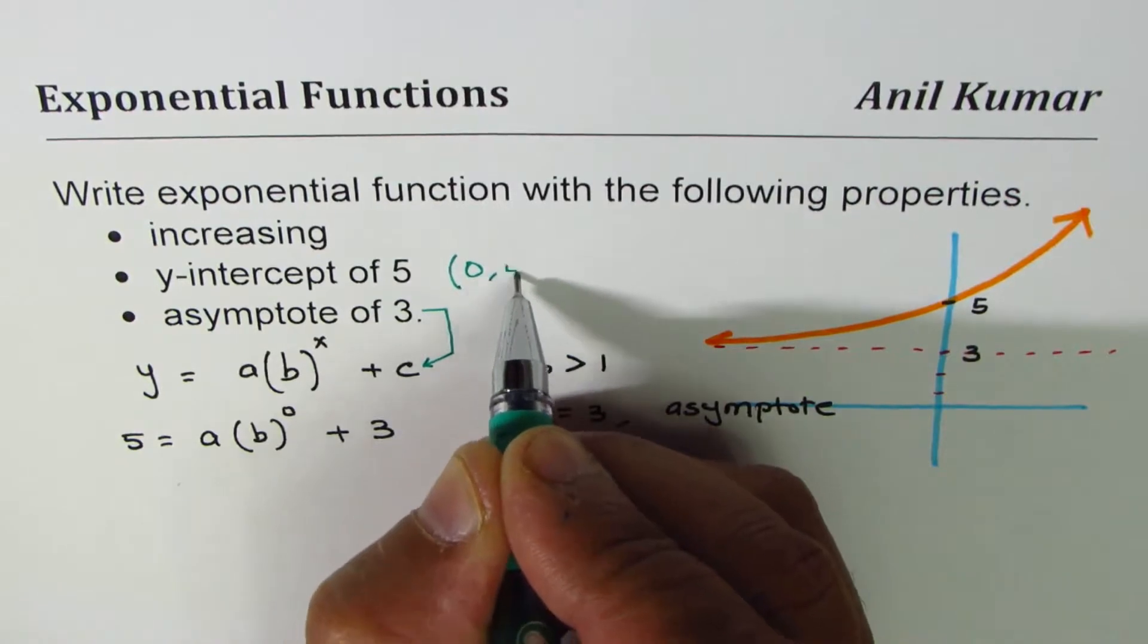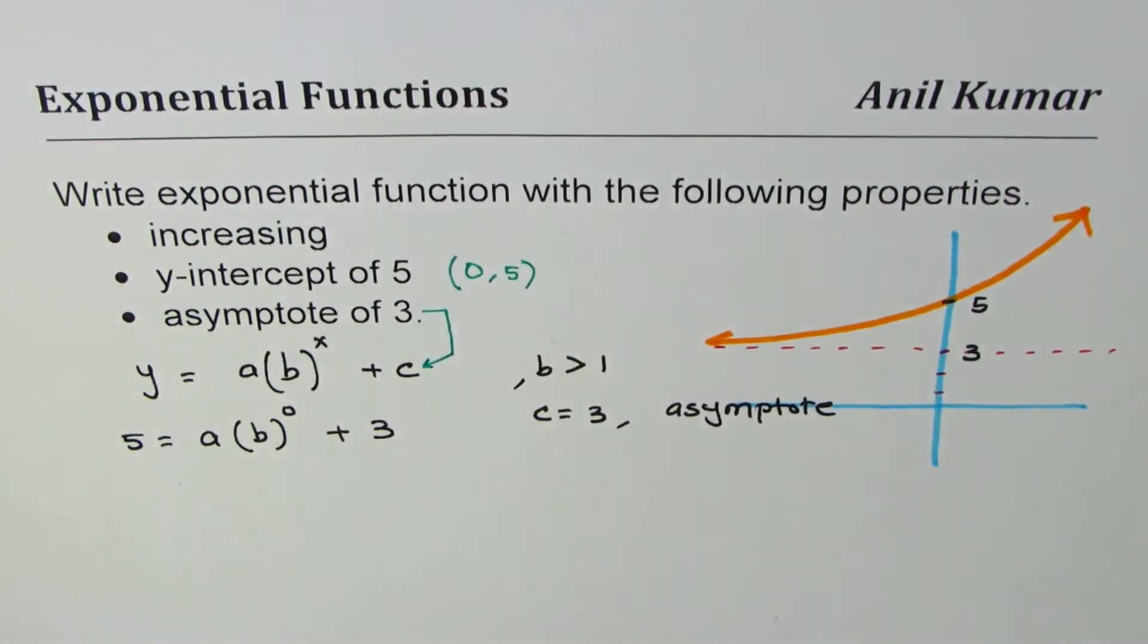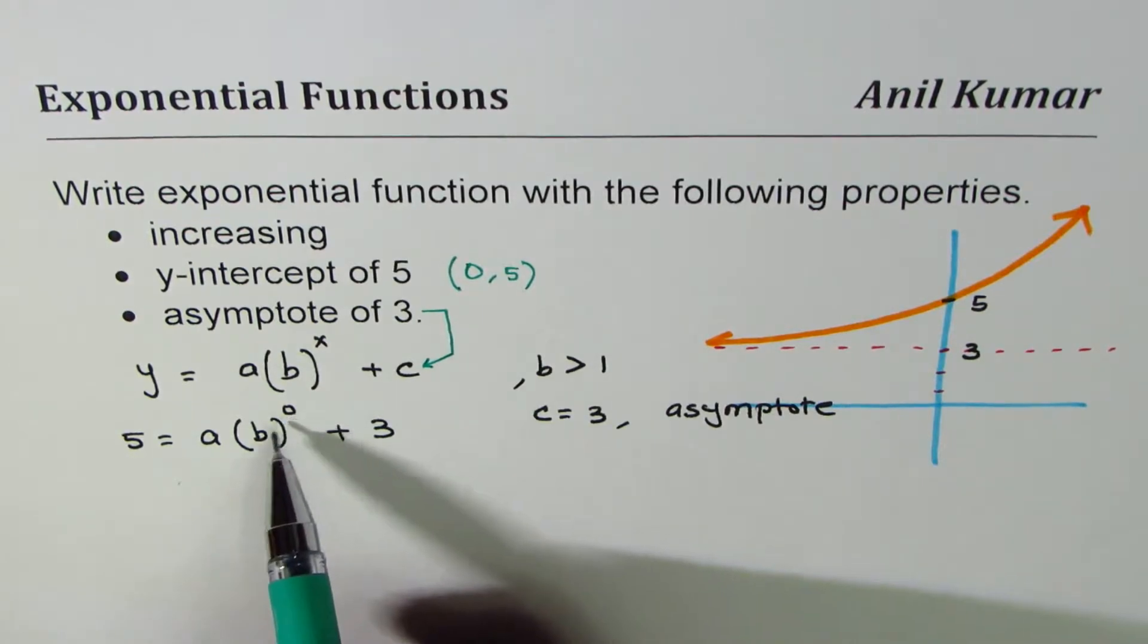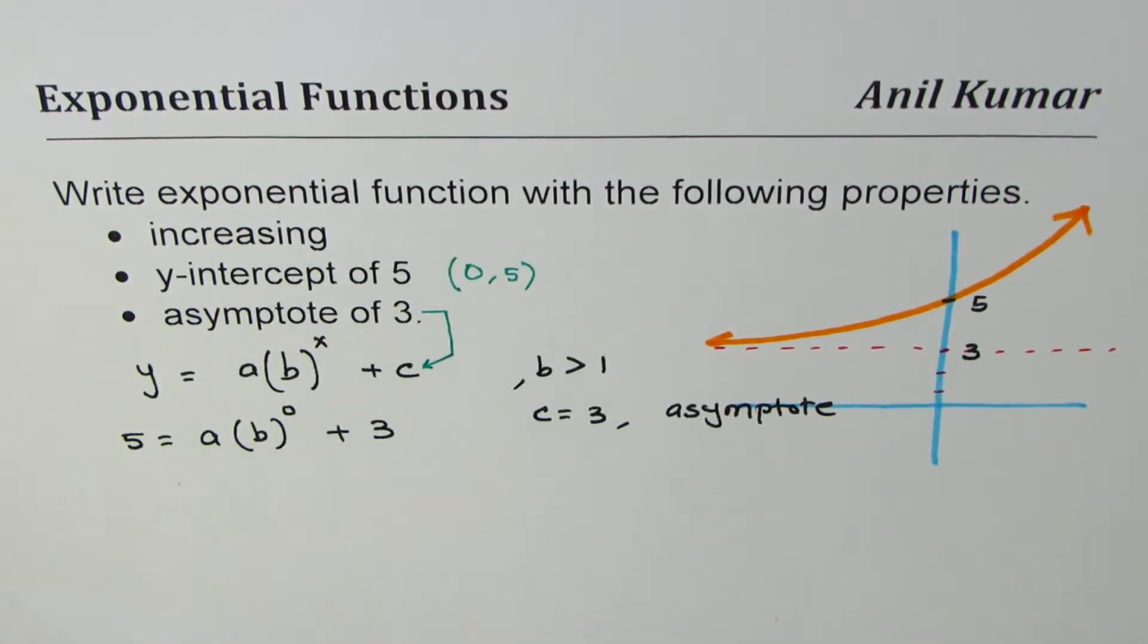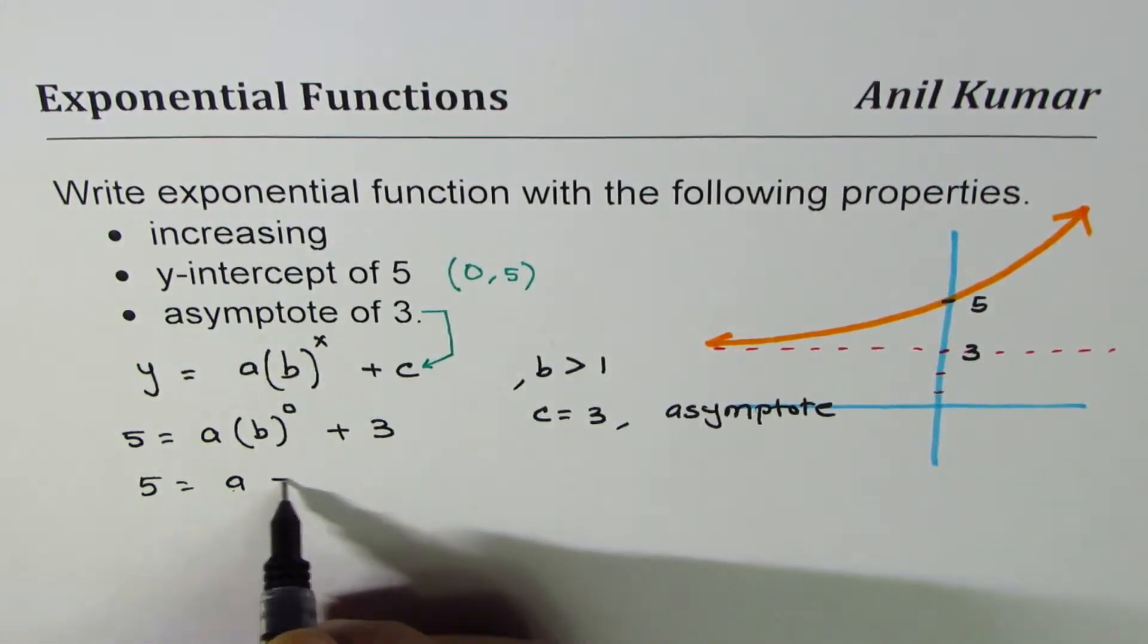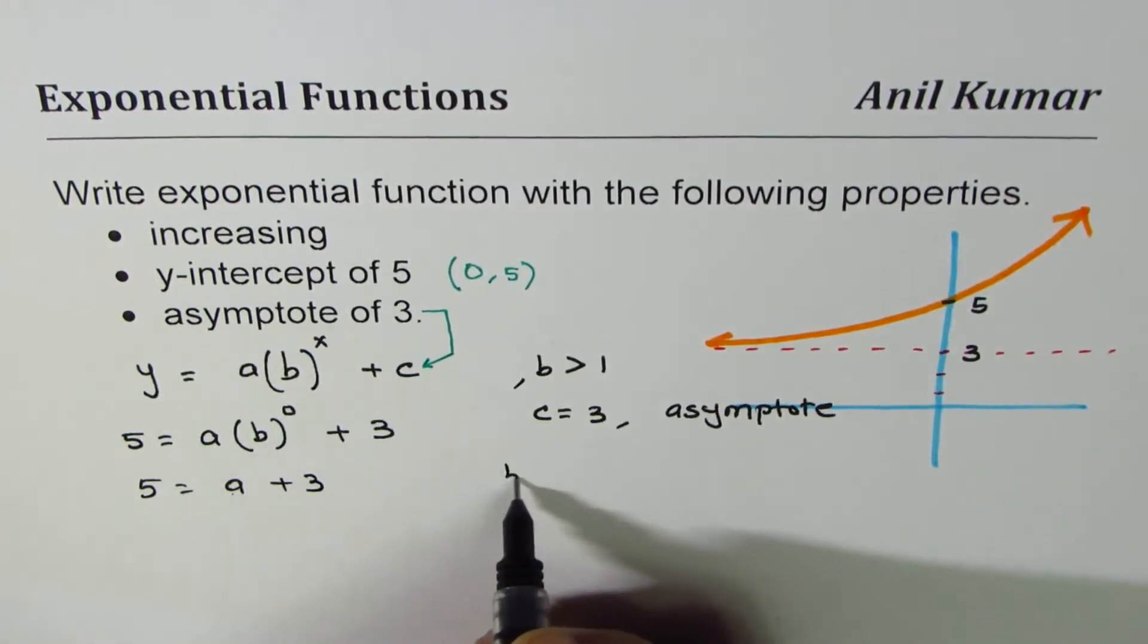Y-intercept means (0, 5) is the value of this point. So we substitute x equals 0, y equals 5, we'll find what a is. That gives us 5 equals a plus 3.